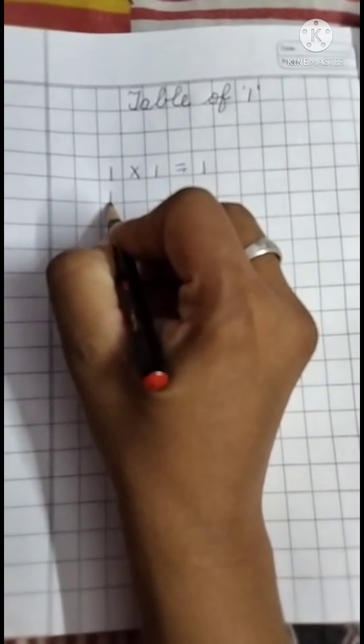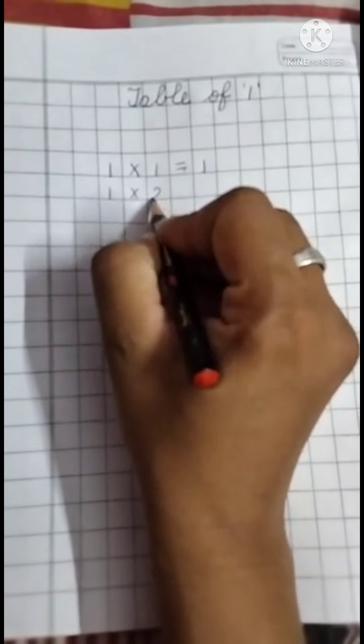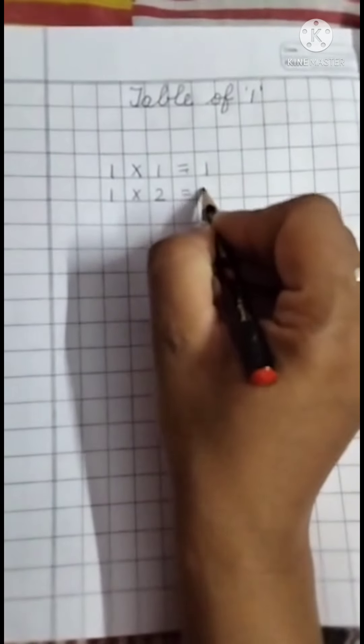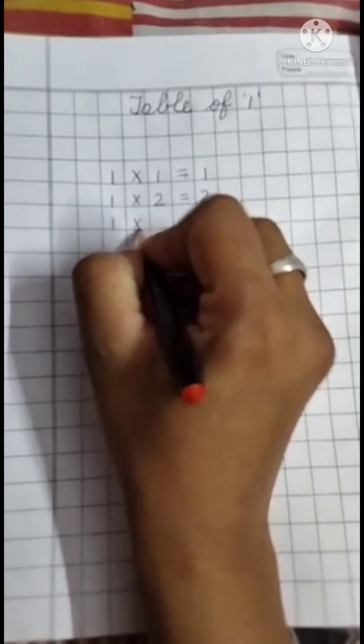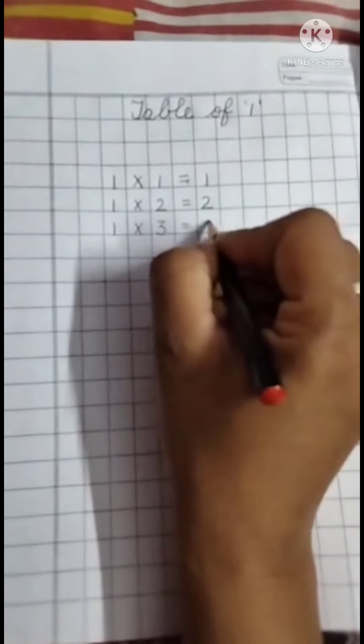Now one. Two is a two. One. Three is a three.